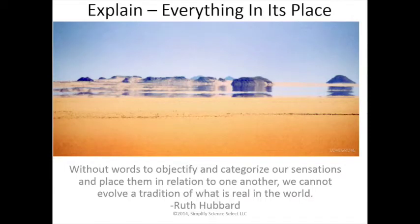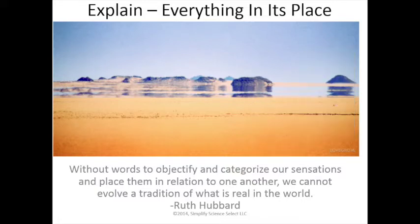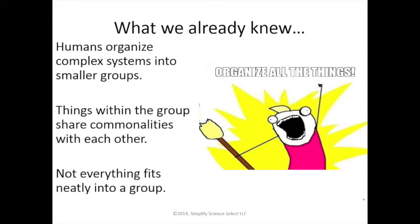This is the lecture 'Everything in Its Place.' The quote is: 'Without words to objectify and categorize our sensations and place them in relation to one another, we cannot evolve a tradition of what is real in the world' — Ruth Hubbard. Represented by our mirage, we have in the desert what appears to be water and hope on the horizon — really just an illusion of heat rising from the sand. Our learning goals: understand and apply taxonomic structure, develop and interpret a dichotomous key, classify and organize an organism based on taxonomy rules.